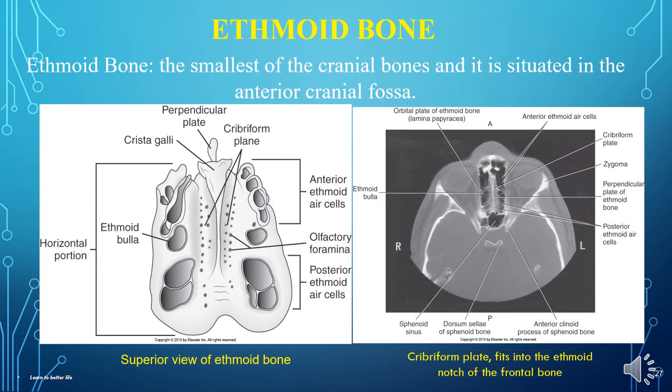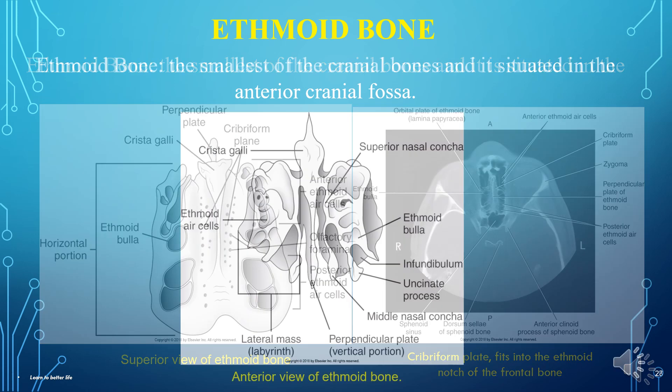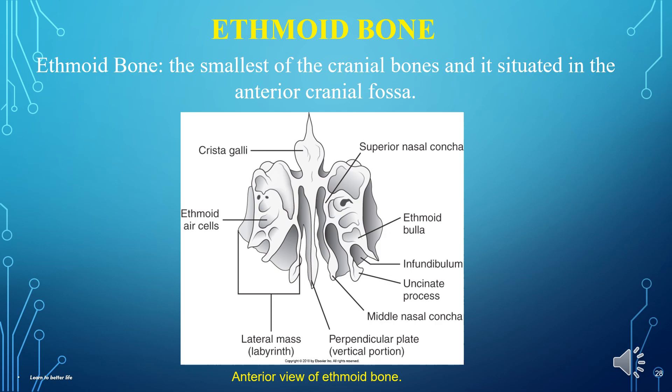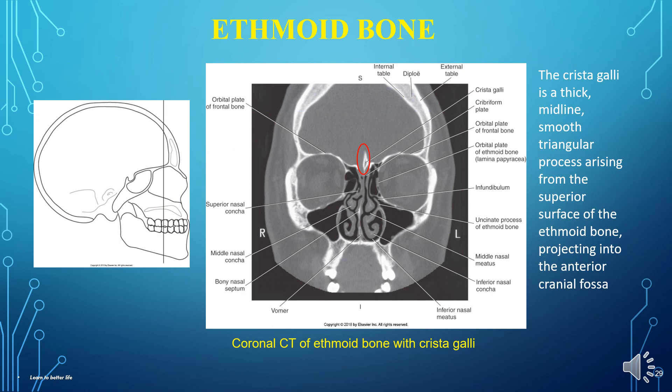The ethmoid bone is the smallest of the cranial bones and is situated in the anterior cranial fossa. This is the anterior view of the ethmoid bone. This is the coronal CT of the ethmoid bone with crista galli. The crista galli is a thick, midline, smooth triangular process arising from the superior surface of the ethmoid bone, projecting into the anterior cranial fossa.